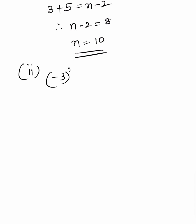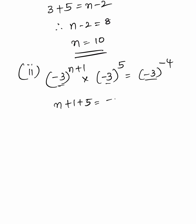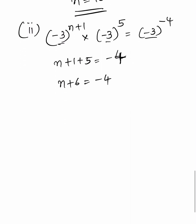Second part: minus 3 whole to the power n plus 1, into minus 3 whole to the power 5, equals minus 3 whole to the power minus 4. All bases are equal on both LHS and RHS, so we equate the exponents: n plus 1 plus 5 equals minus 4. Therefore n plus 6 equals minus 4, so n equals minus 4 minus 6, therefore n equals minus 10.